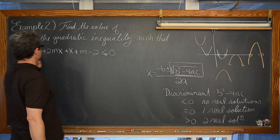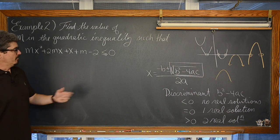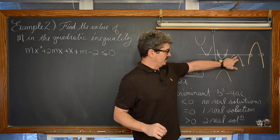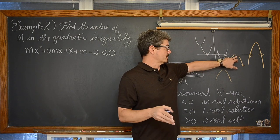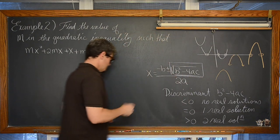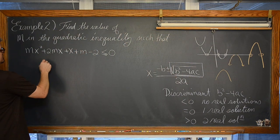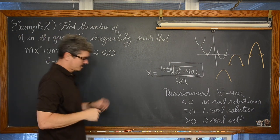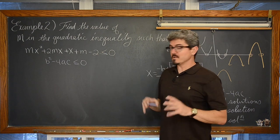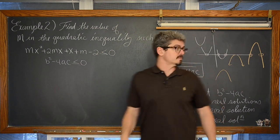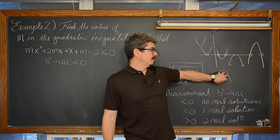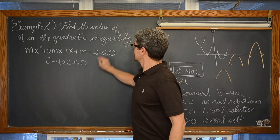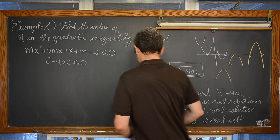The only way for this parabola, which must be opening down, to always be less than zero — unless it just actually touches the x-axis — is for that discriminant to be less than or equal to zero. We want to focus on the less than part because we don't want any other solutions. So we are going to say that b squared minus 4ac needs to be less than or equal to zero. If there was just a strict less than zero, we would not want any real solutions, and we would just be making sure that the discriminant was less than zero, showing that there is no x-intercept. So wherever that parabola is, it is always going to be giving you negative values because there are no real solutions.